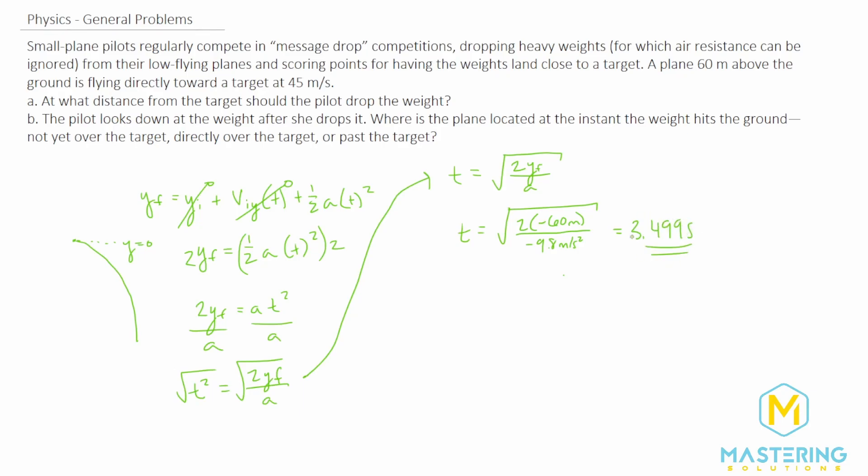So this is how soon before she hits the target she needs to drop the weight. But what is that distance? So we'll take the initial velocity in the x direction and in this case it's going 45 meters per second because when she drops it the weight is going the exact same speed that the plane is. So if we use the velocity equation we have delta x over delta t. Let's multiply both sides by t.